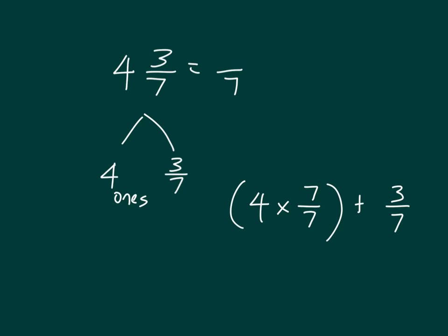4 times 7 is 28. Count by sevenths, 7 sevenths, 14 sevenths, 21 sevenths, 28 sevenths.